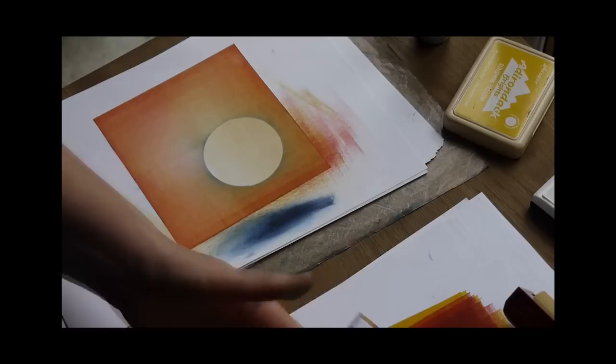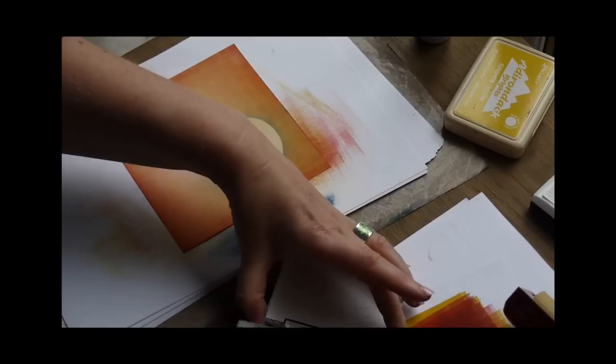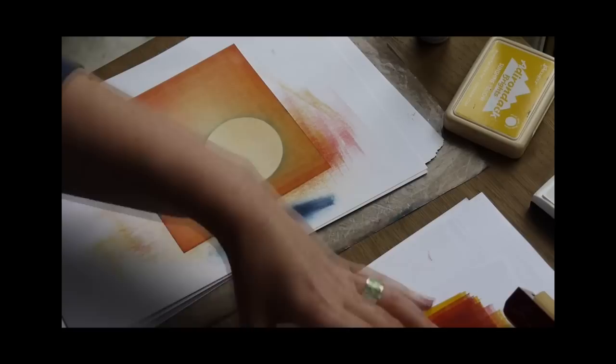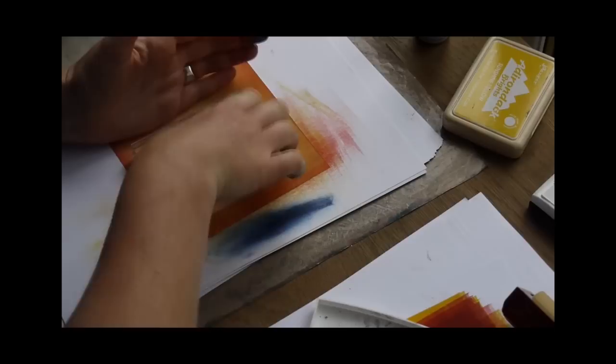So moving on to the stamps now, starting with our fairy, we're going to ink the fairy up in our onyx black. Okay, so placing the fairy down now in the center of our moon, give that a good press down.